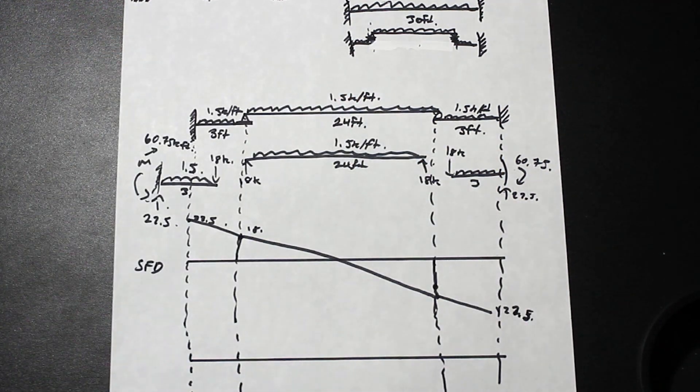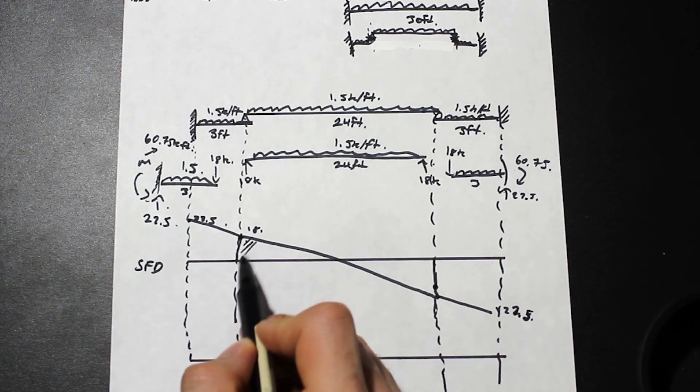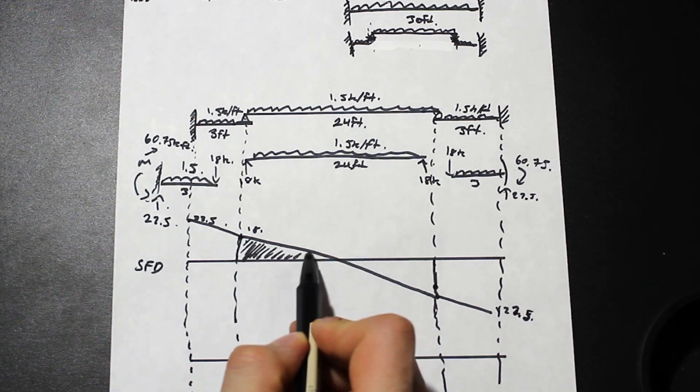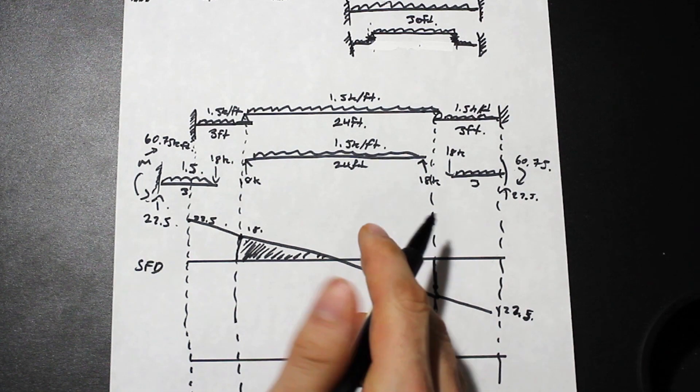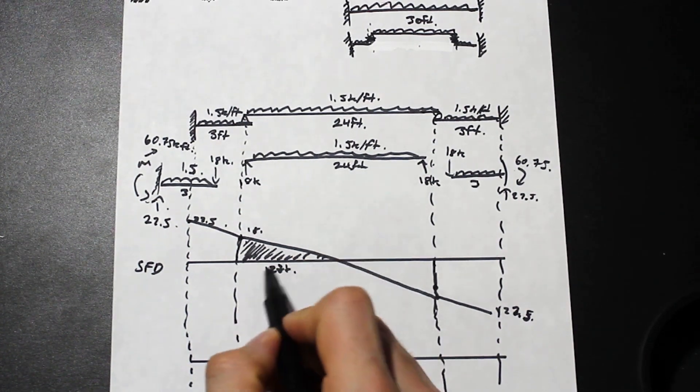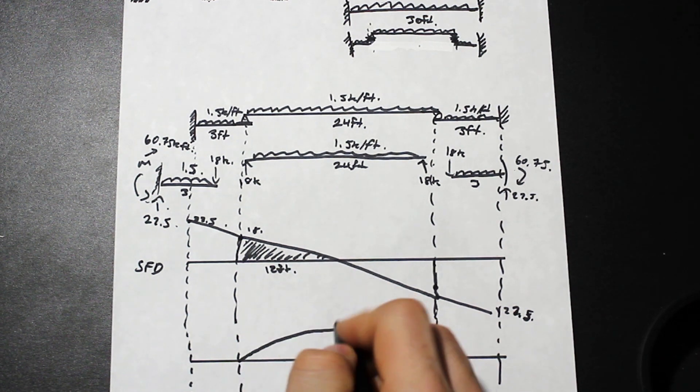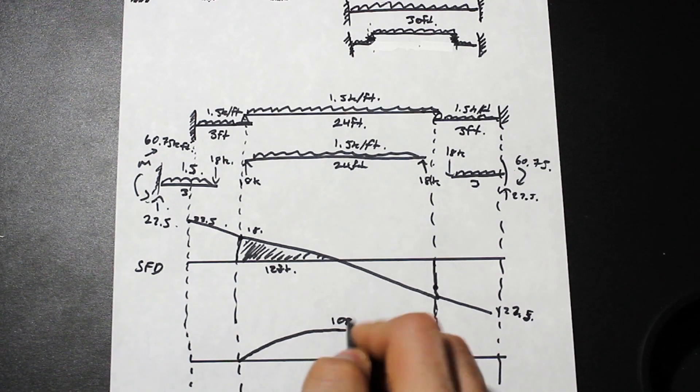And if we go ahead and we calculate out the moment here, what we're going to find is that the area of this triangle here, obviously, to the point of zero shear, which we know is going to be, so we have 18 times 12 feet divided by 2. That's going to be 108 here for the moment.